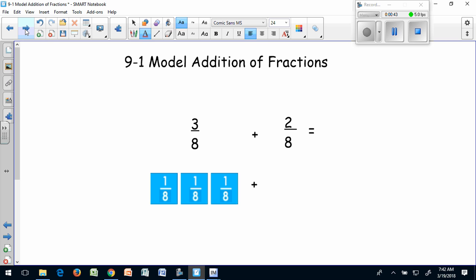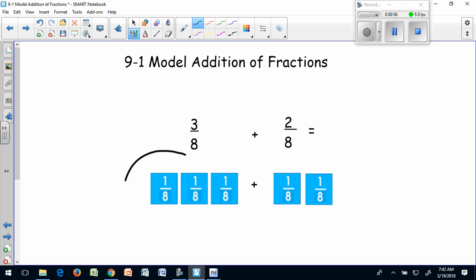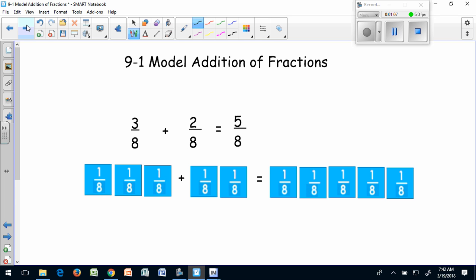Adding to that three eighths, we're going to add two more fraction tiles. We're going to add two eighths to our three eighths. And when I look at all of my fraction tiles and count them up together, I can see three eighths plus two eighths is going to give me five eighths.